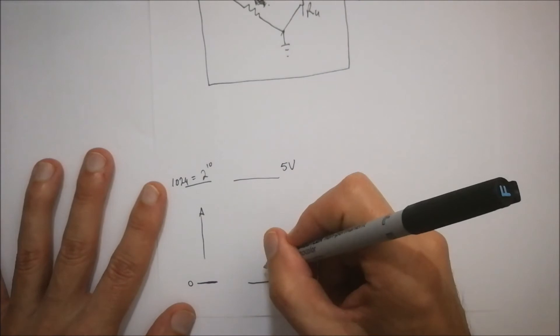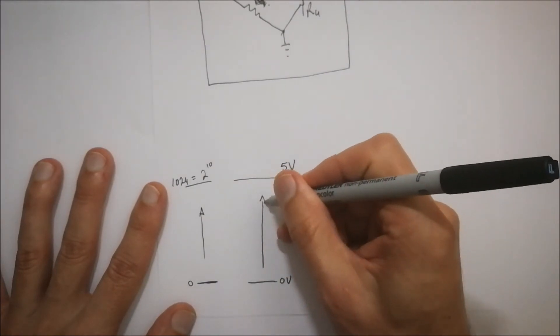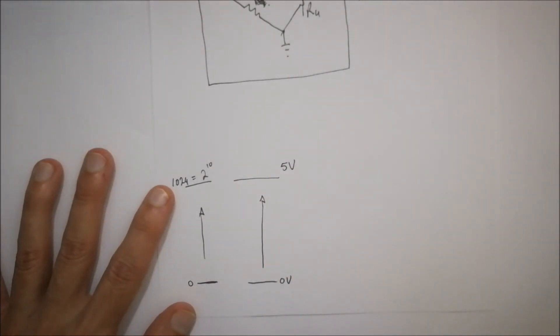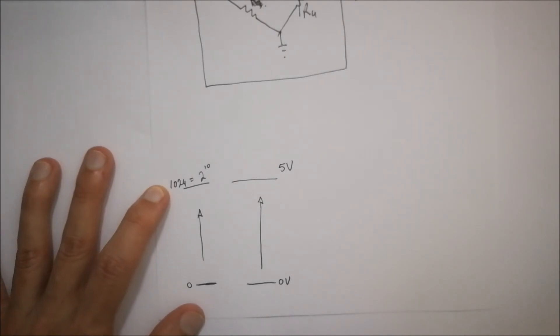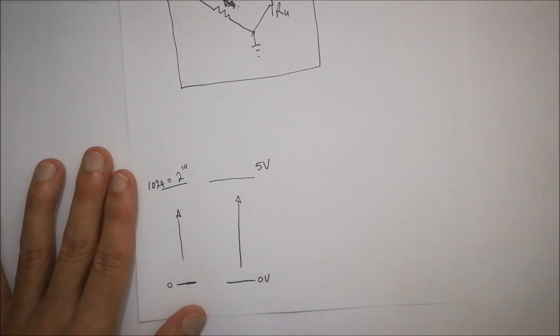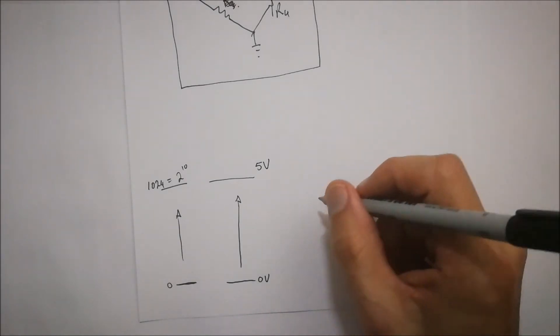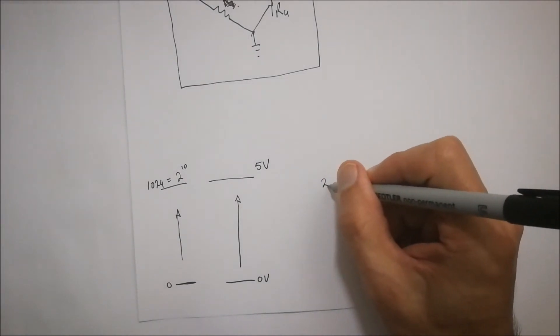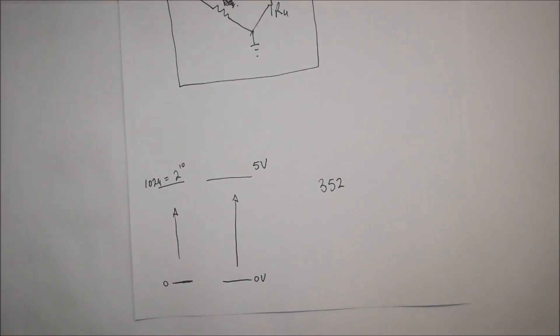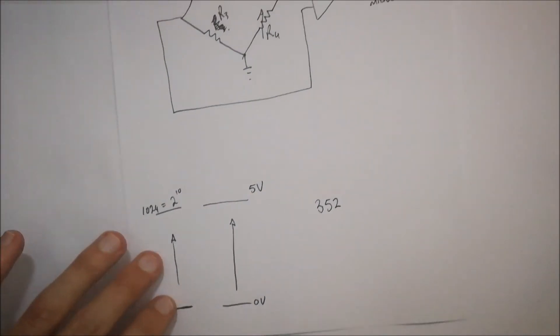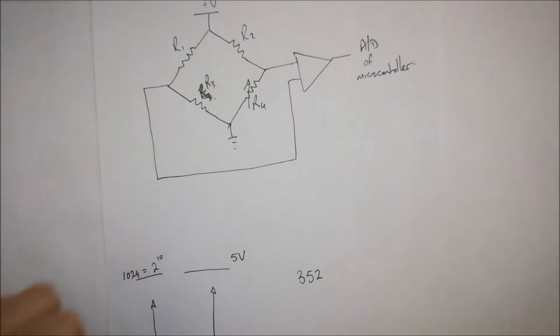Essentially that correlates with values going from 0V all the way up to 5V. That's if your microcontroller is operating in a 5V environment. You do get some microcontrollers that do operate on 3.3V for example. But generally we assume it to be 5V. So let's say for example I get a value from the analog to digital converter which is equal to 352.